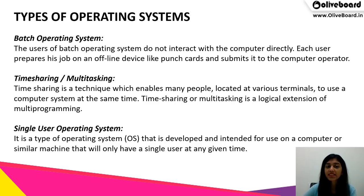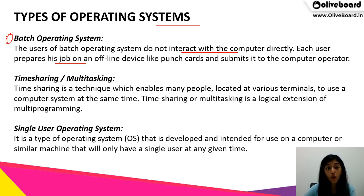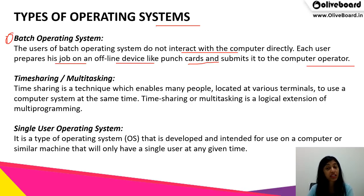Now we will discuss the types of operating system. First is batch operating system. Users of a batch operating system do not interact with the computer directly. Each user prepares their job on an offline device like punch cards and submits it to the computer operator. In batches, all that is required is done offline and then the operating system carries on the activity.